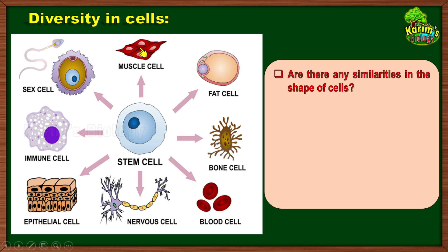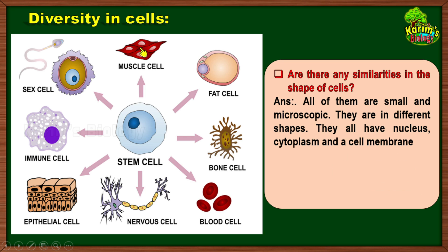So it gives the clear indication that all these cells may not be in similar shape. A few of them may be similar but most of them are not in similar shape. One common thing about all of them is that they are all very tiny, small, and can be seen only under a microscope — they are small, microscopic, and in different shapes.